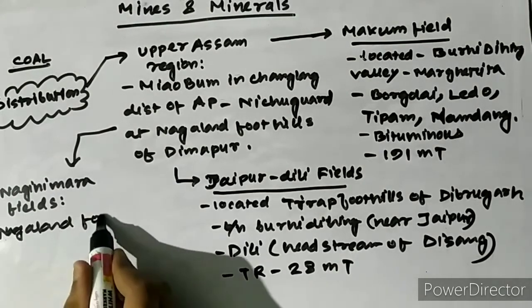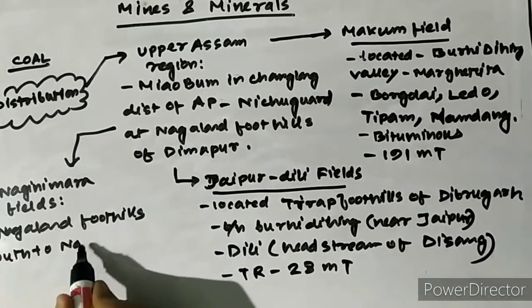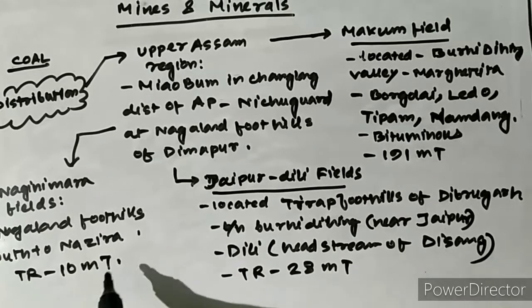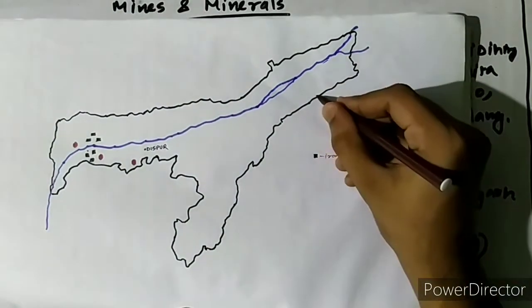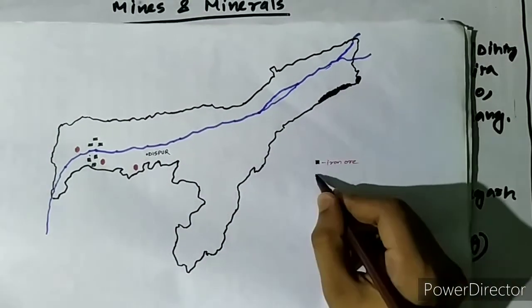The Naginimara field is located at Nagaland foothills just south of Nazira. The total reserve is about 10 million tons and the important mining center is Naginimara area.